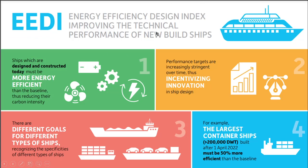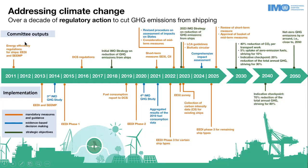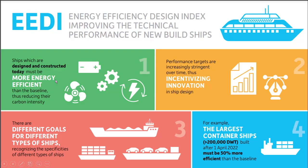Now let's have a quick synopsis of EEDI — Energy Efficiency Design Index. Basically it is a design index for improving the technical performance of new-build ships. EEDI was implemented in 2013 entering into force at phase 0. The aim was to build ships that are more efficient in design so as to reduce carbon intensity. The performance target becomes more stringent and innovation in ship design increases. Different goals for different types of ships were recognized — that is the EEDI.